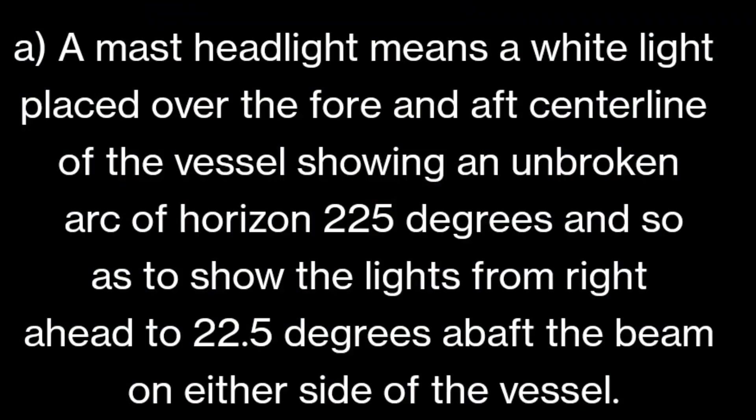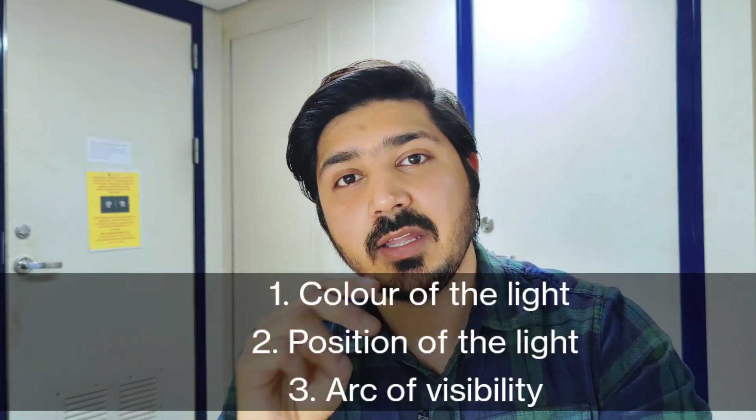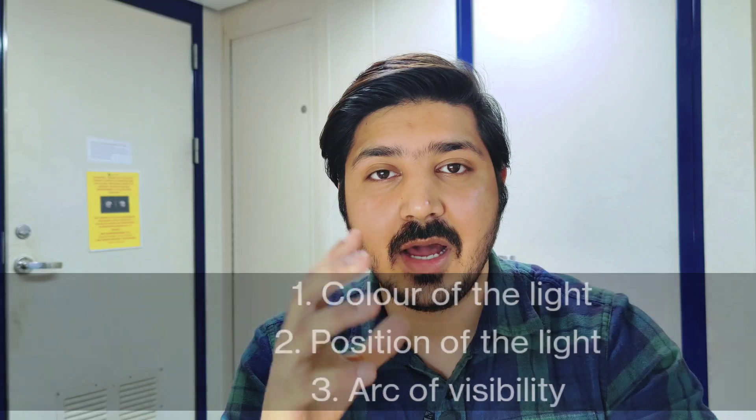We are going to start with Part A of this rule, which is about the masthead light. For all the parts given in this rule, we will cover three basic things: first, the color of the light; second, the position of the light; and third, the arc of the horizon — the arc of visibility of that light.